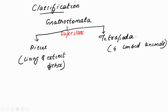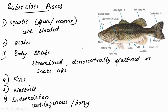Gnathostomata is classified into Superclass Pisces and Tetrapoda. Tetrapoda includes all four-limbed animals, and Pisces includes all jaw fishes.